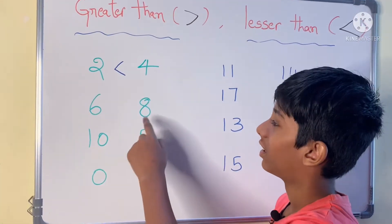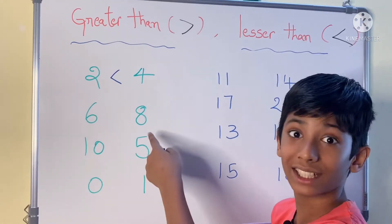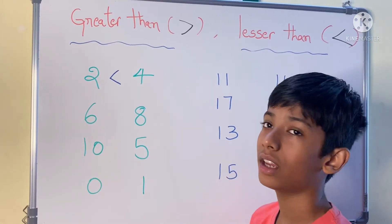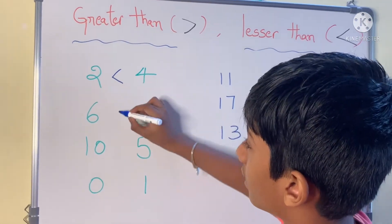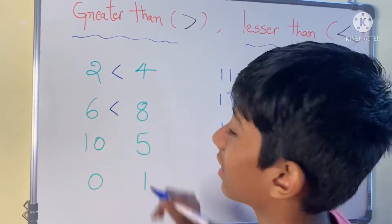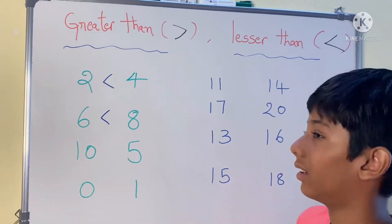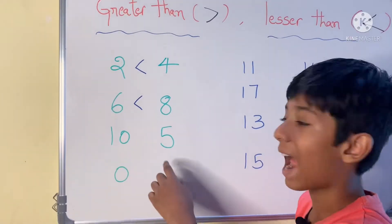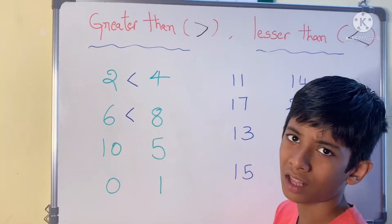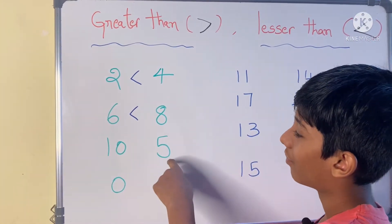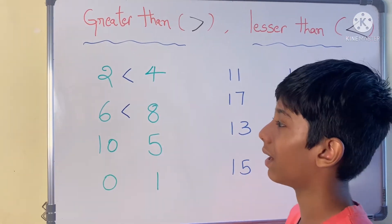So six and eight: which is big and which is small? Eight is big and six is small. So six is lesser than eight. Ten and five: which is bigger, which is small? Five is small and ten is big.